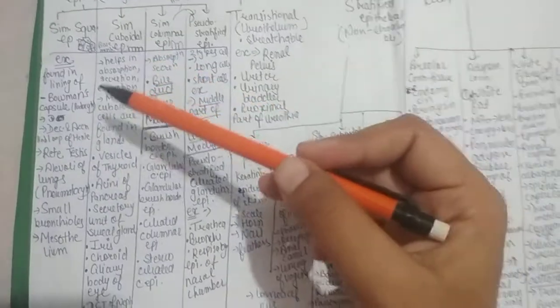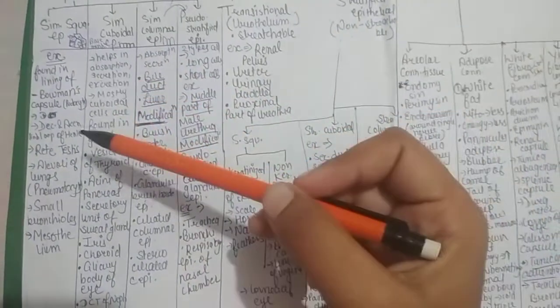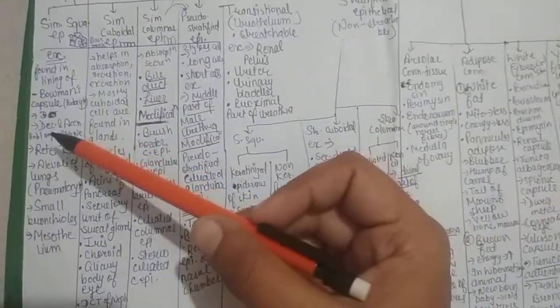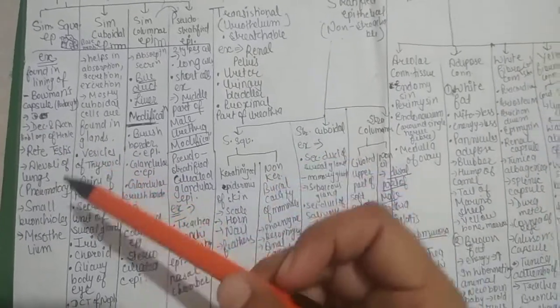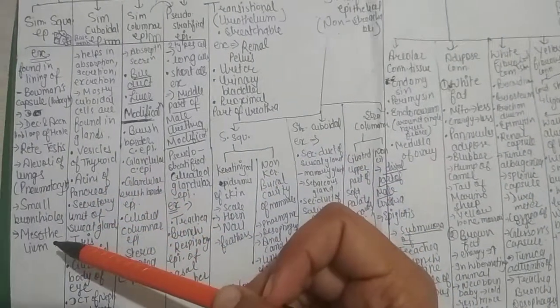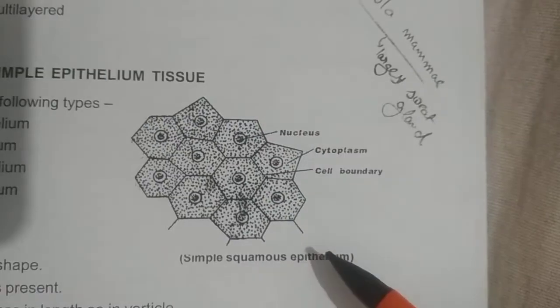Simple squamous epithelium is found in lining of Bowman capsules, podocytes, descending and ascending loop of Henle, rooted STs, alveoli of lungs, pneumatocytes, small bronchioles, and mesothelium. Diagram of simple squamous epithelium.